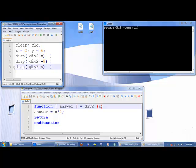Lastly, we have div2 of y. y is 6, so the value of 6 is passed down to x down here in the function. 6 divided by 2 is 3, and so the last thing that should be displayed is 3.